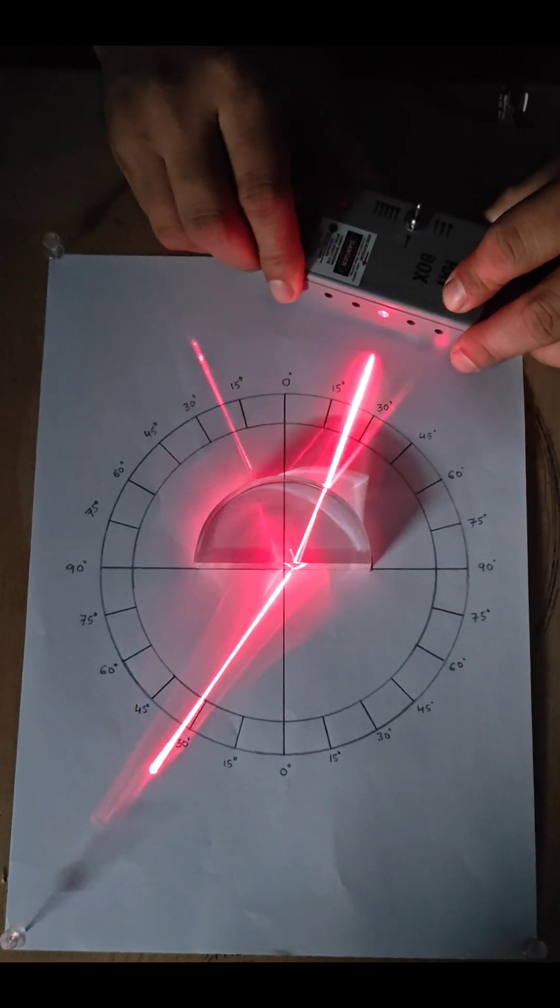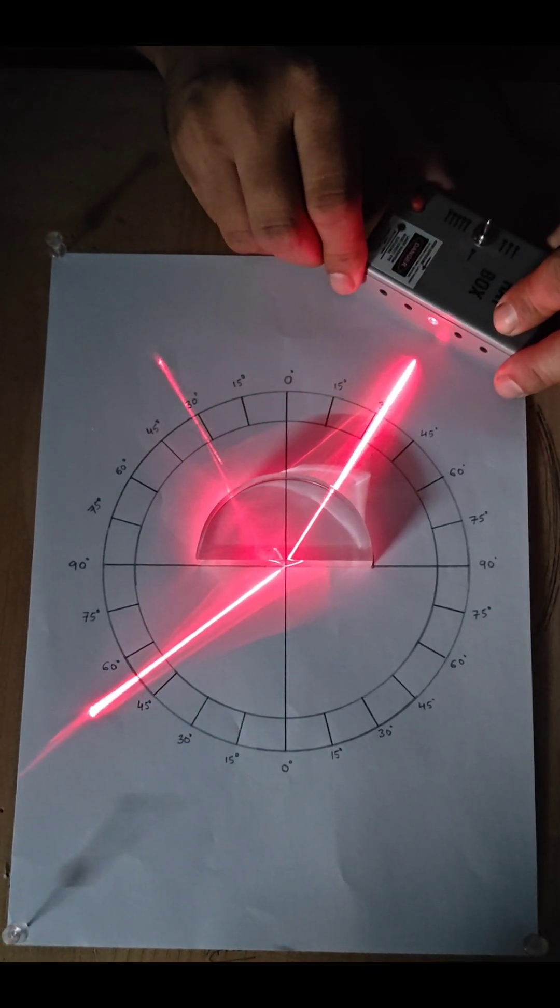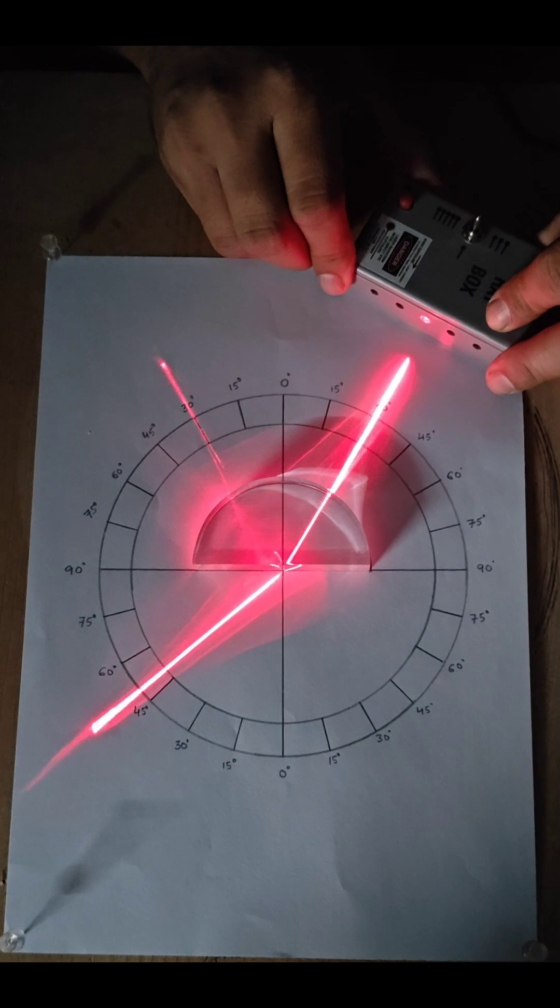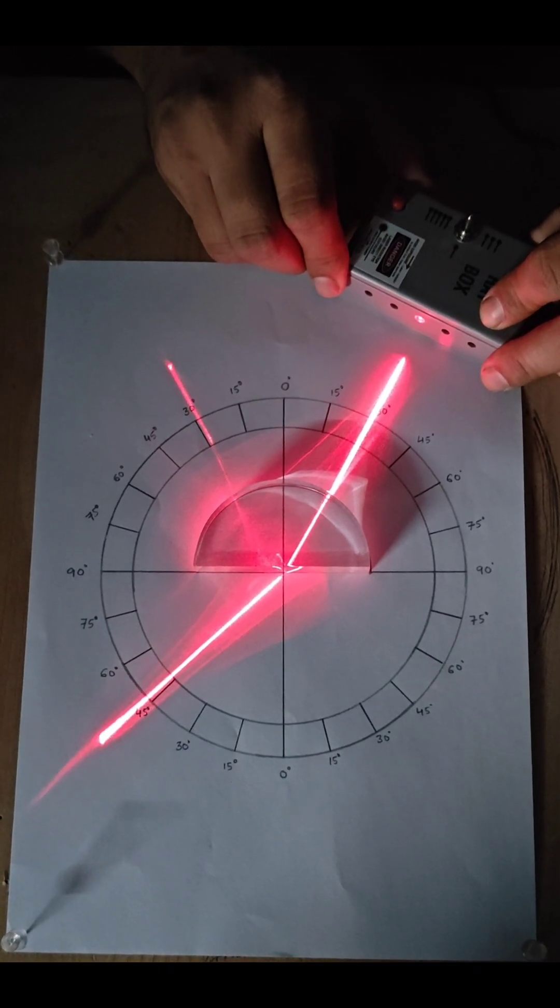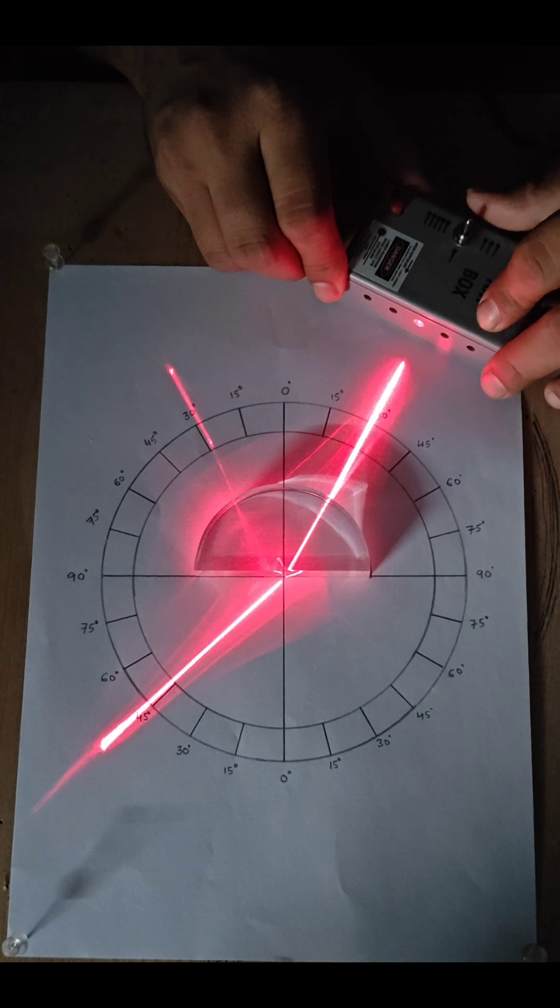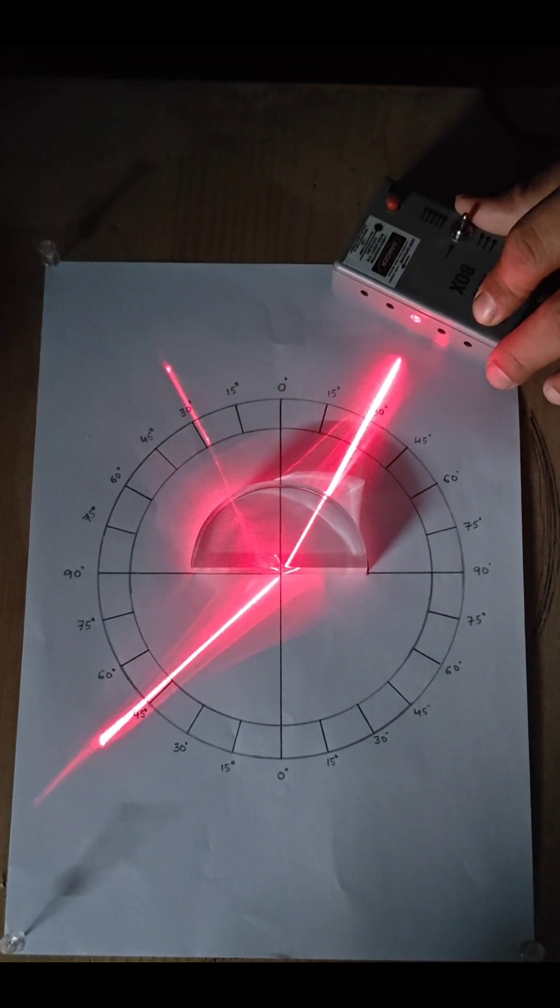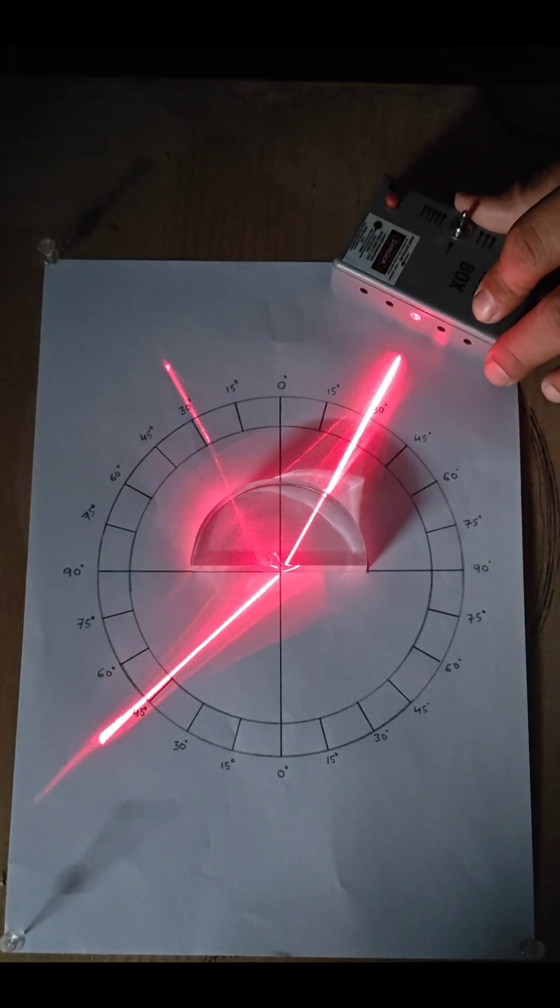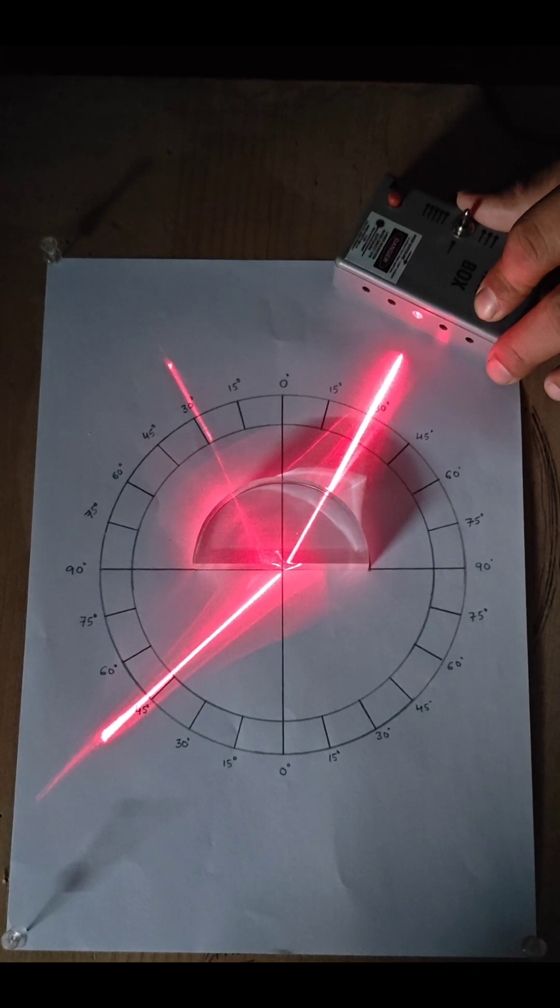Now, if we increase the angle of incidence a little further, say at 30 degree angle of incidence. So, at this 30 degree angle of incidence, we are having a wonderful observation that at 30 degree angle of incidence, the ray of light is refracted roughly at 45 degree angle of refraction.